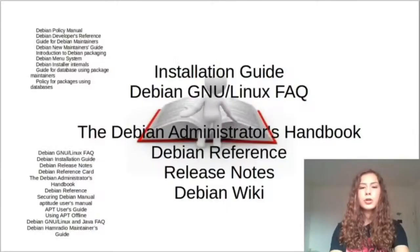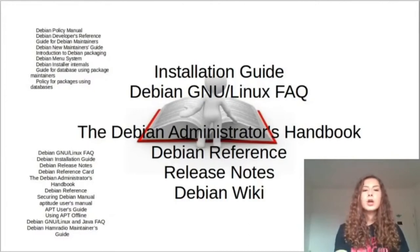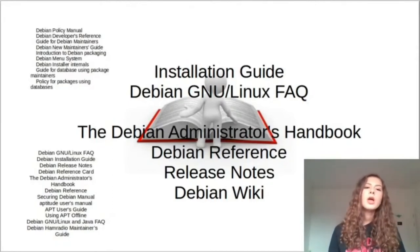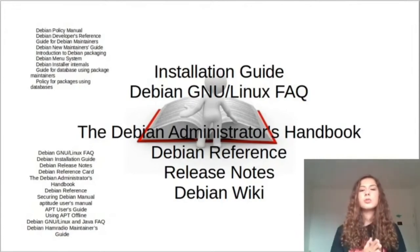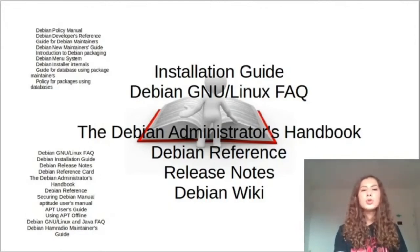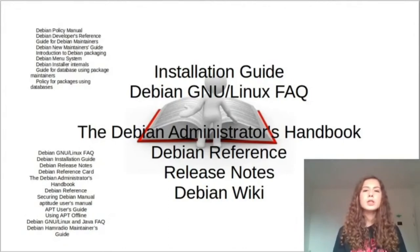An important part of an operating system is the documentation. The technical manuals describe the operation and use of programs. As part of its efforts to create a high-quality free operating system, the Debian project truly tries to provide all of its users with proper documentation in an easily accessible form. These are separated into user docs and developer docs. For users, there is the Debian Installation Guide, Debian Administrator's Handbook, Securing Debian Manual, and Aptitude Users Manual, among others. For Debian developers, there is the Debian Policy Manual, Debian New Maintainer's Guide, and Introduction to Debian Packaging.